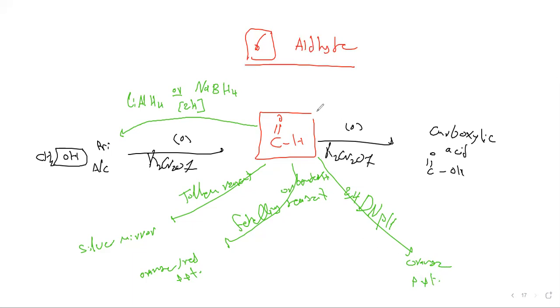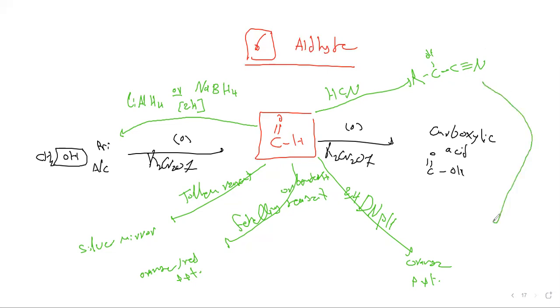Aldehyde also reacts with HCN or KCN to form a nitrile. This nitrile can then be converted into carboxylic acids by using H2O and HCl, or by reacting with diluted H2SO4.